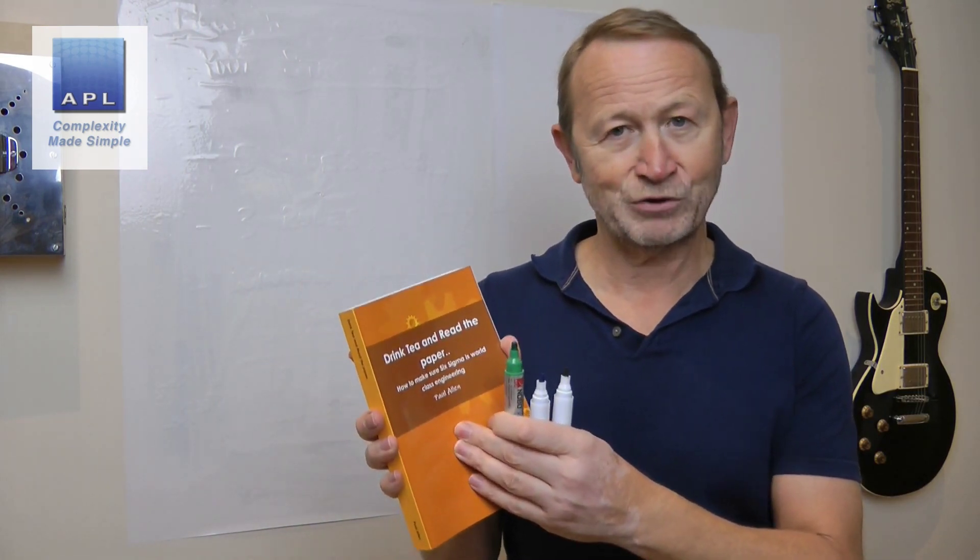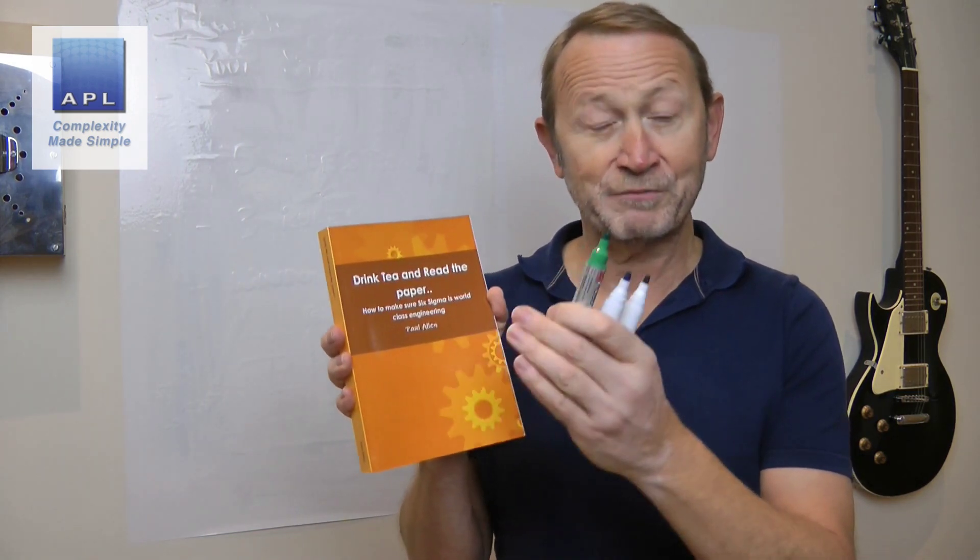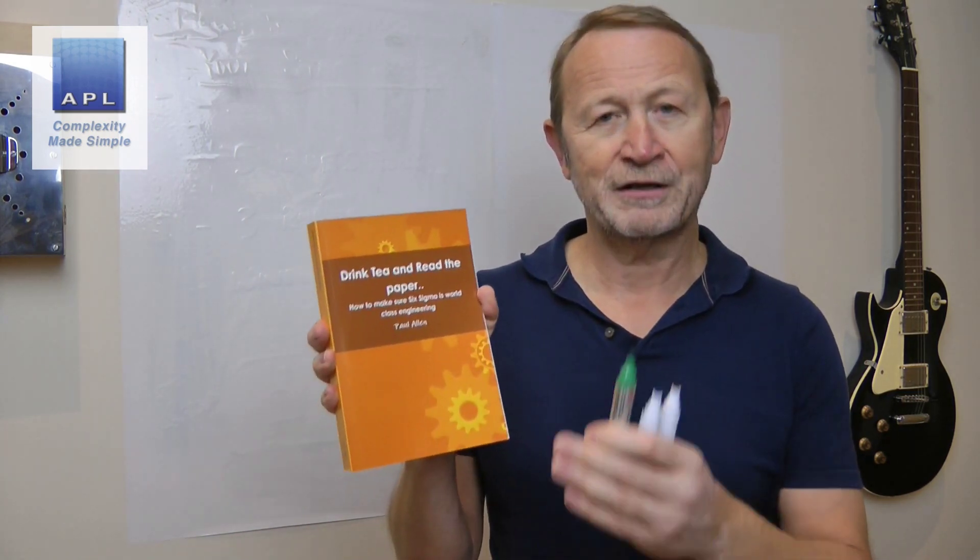But if you want a textbook of some of the material that are in the videos, drink tea and read the paper. If you're doing Six Sigma green belt or black belt training, people find this text fantastically helpful. Click on the link at lulu.com, it's in the description below and buy the latest version. So thank you very much for that support. Let's get on to today's subject.